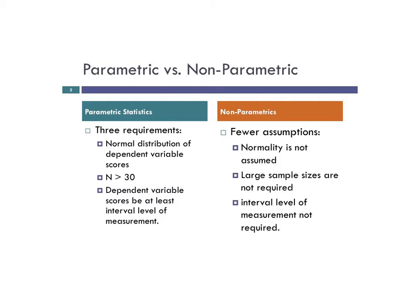This video continues on the parametric and non-parametric lectures we've been doing so far this semester. Today we're going to look at the non-parametric equivalent of a one-way independent group's ANOVA. Keeping in mind, we use this when normality is not found amongst our dependent variable, when we have small sample sizes, or when a dependent variable doesn't meet scale level of measurement.